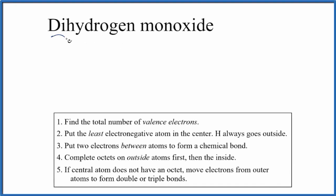Let's draw the Lewis structure for dihydrogen monoxide. So it's helpful if we change this to a chemical formula. Di means two, mono means one. So we have two hydrogen atoms, let's just write that like this, and one oxygen atom.